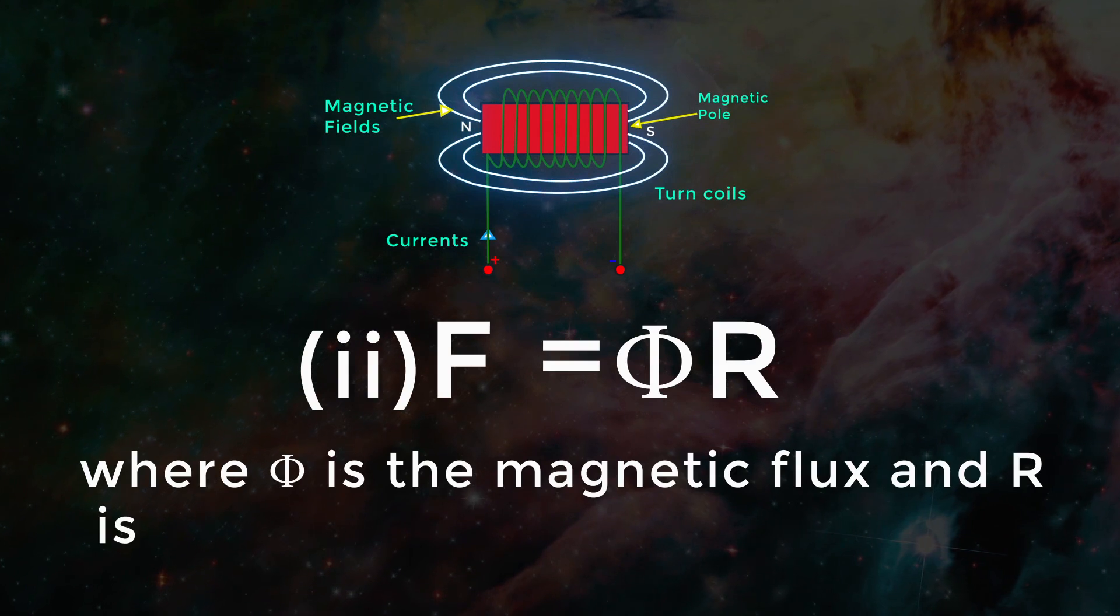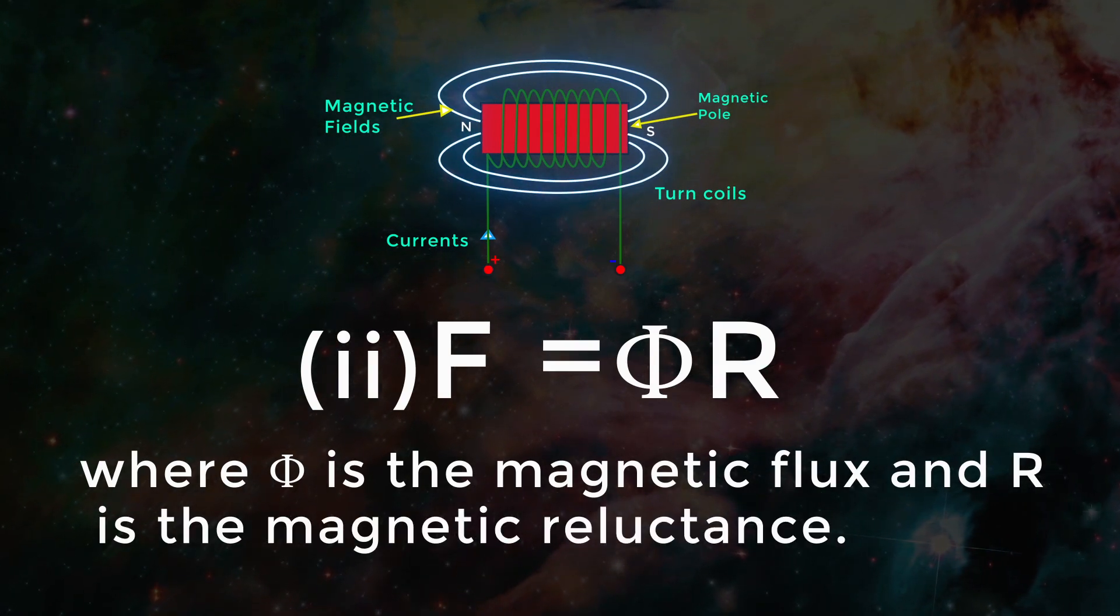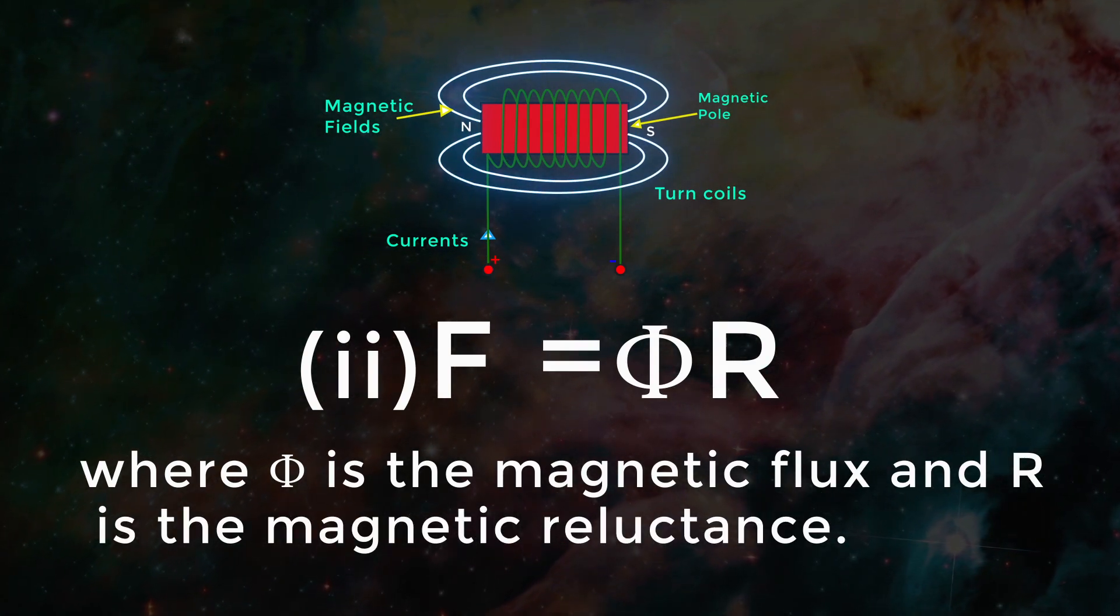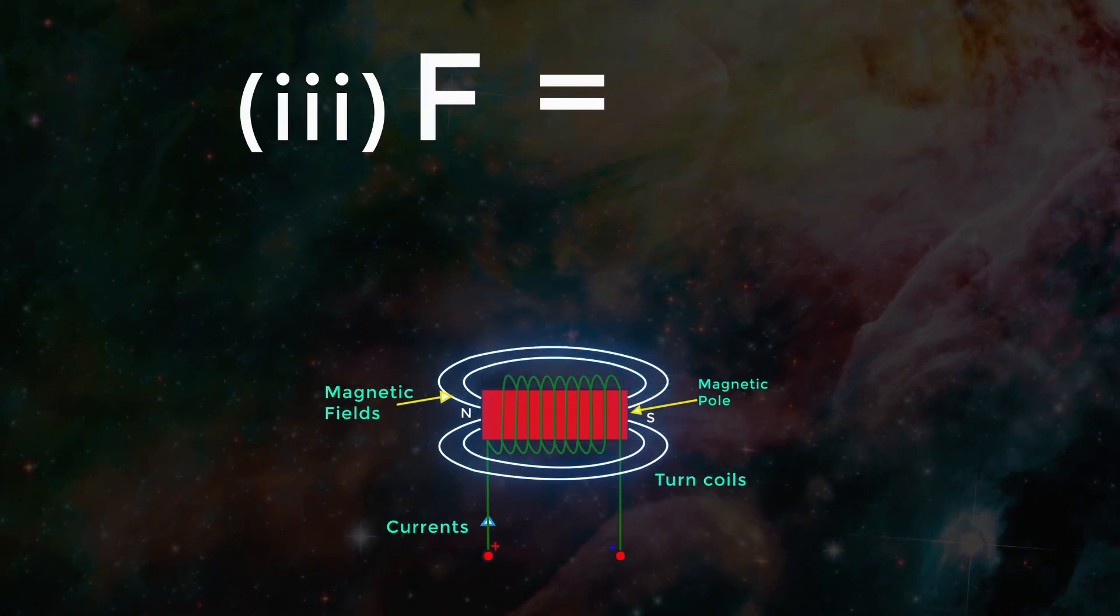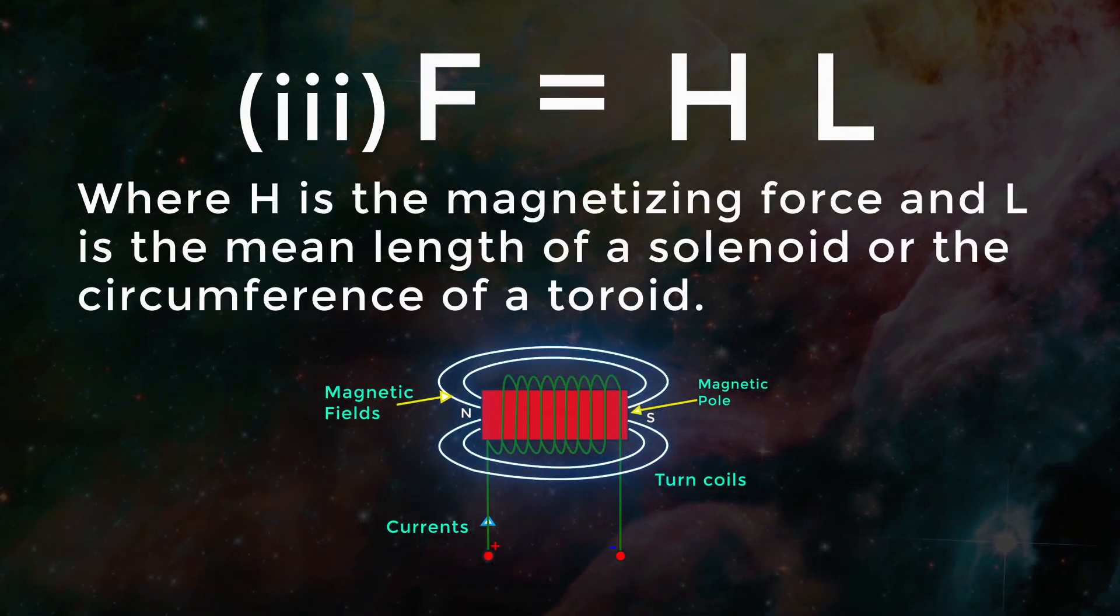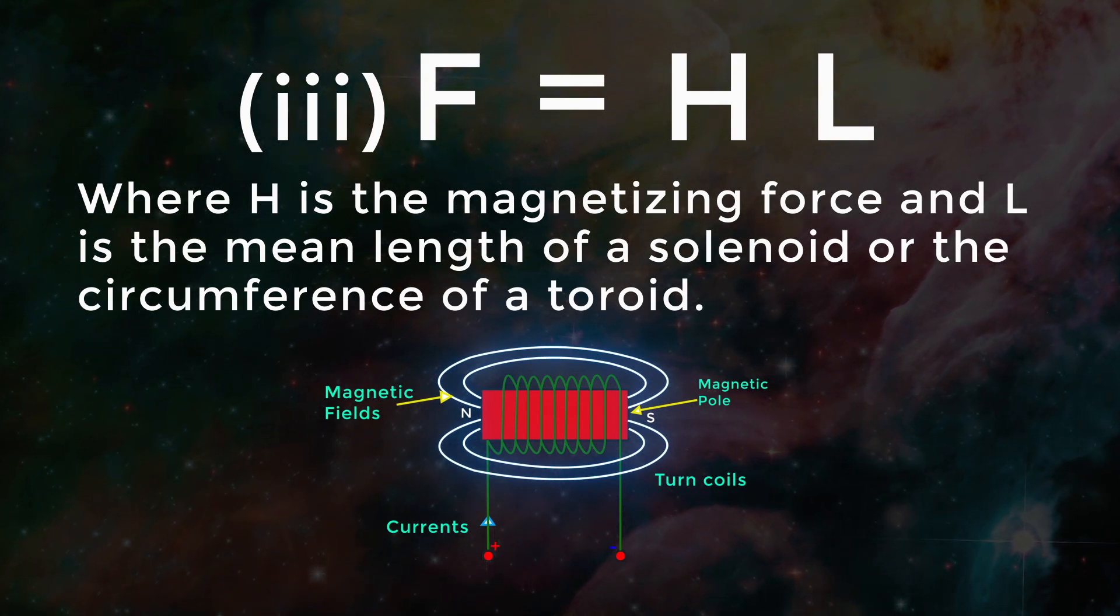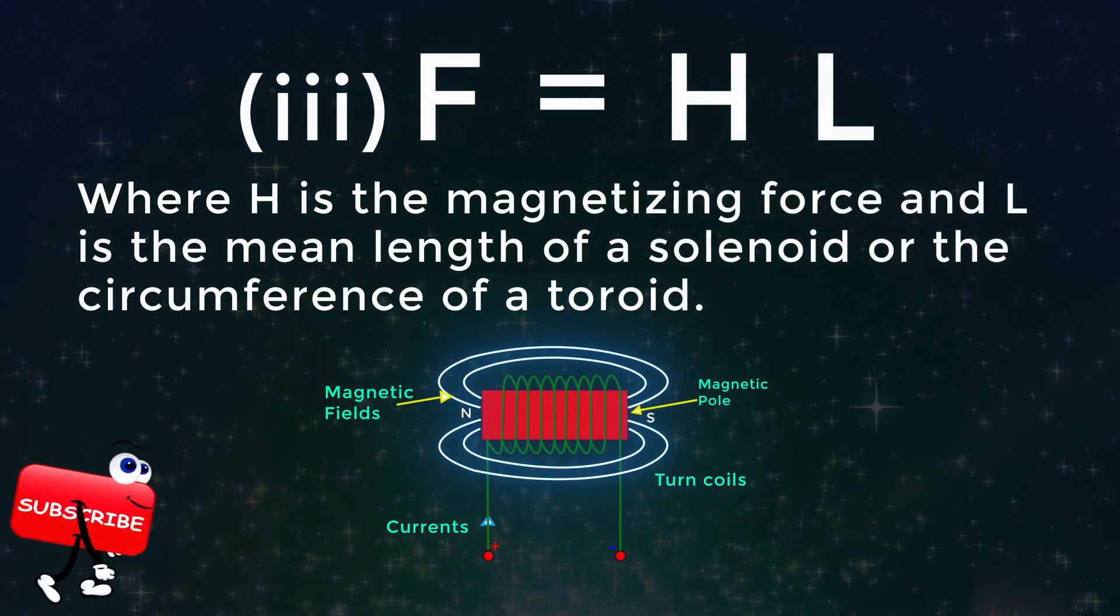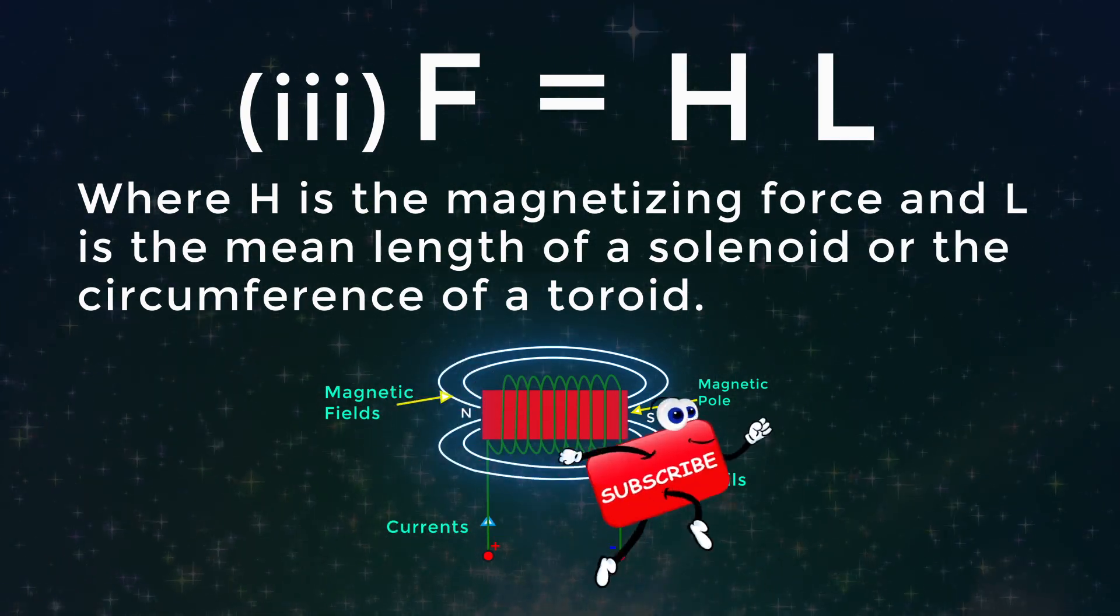F equals Phi R, where Phi is the magnetic flux and R is the magnetic reluctance. F equals H L, where H is the magnetizing force, the strength of the magnetizing field, and L is the mean length of a solenoid or the circumference of a toroid.